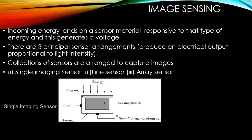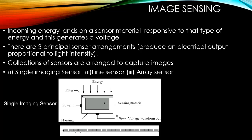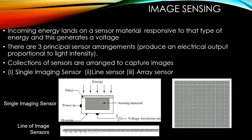A single imaging sensor has a housing material for the sensing material, which could be silicon, plus a filter to remove unwanted radiation — typically an IR filter. The incoming energy passes through the filter and falls on the sensing material, producing a proportional voltage output. Alternatively, sensors can be arranged side by side in a line — thousands closely packed — or in a grid called an array, with millions of sensing elements in a half-inch area.